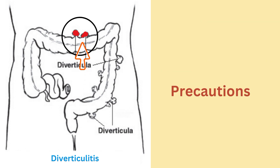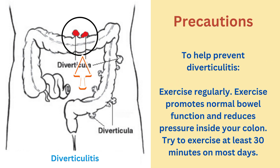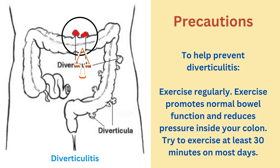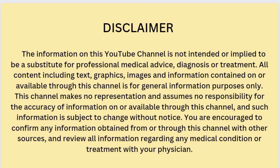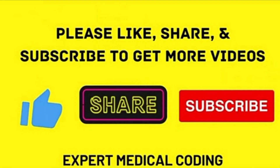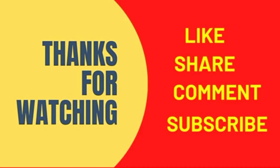To help prevent diverticulitis, exercise regularly — it promotes normal bowel function and reduces pressure inside your colon. Try to exercise at least 30 minutes on most days. Also avoid smoking and drink plenty of fluids. Please like, share, and subscribe to Expert Medical Coding. Thanks for watching.